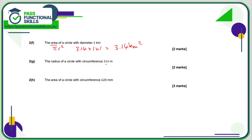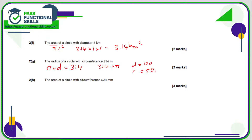Here we've been given the circumference and need to work backwards to the radius. The formula for circumference is pi times the diameter. We know pi times the diameter equals 3.14, so the diameter is 3.14 divided by pi — 3.14 divided by 3.14 is 1, so the diameter is 1, and therefore the radius is 0.5 metres.